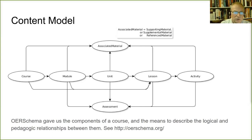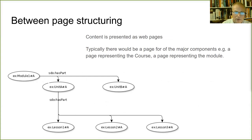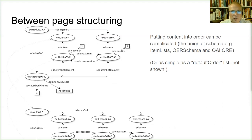Typically each component is represented as an HTML page — a page for each module, unit, and lesson. Schema.org can provide relationships for structural metadata, showing how these relate to each other: a module has parts which are units, units have parts which are lessons. That's straightforward if you don't care about ordering; once you start caring about ordering things can get much more complicated, and this is where you come up with something that is a union of schema.org item lists, OER Schema, and the OAI object reuse and exchange specification.